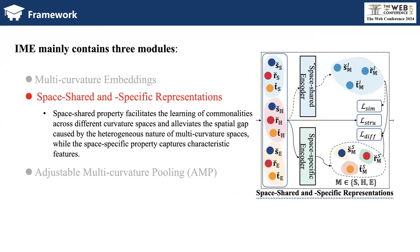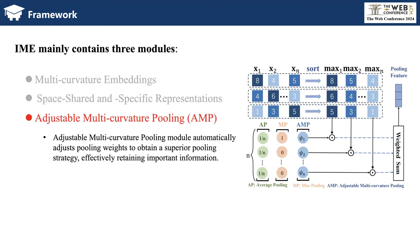Then, for the Space Shared and Specific stage, the Space Shared property facilitates the learning of commonalities across different curvature spaces and alleviates the spatial gap caused by the heterogeneous nature of Multi-Curvature spaces, while the Space-Specific property captures characteristic features. Finally, the Adjustable Multi-Curvature Pooling module automatically adjusts pooling weights to obtain a superior pooling strategy, effectively retaining important information.